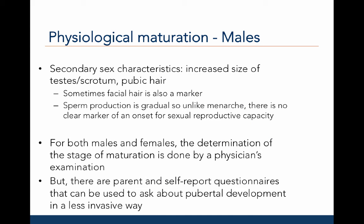When we talk about maturation and secondary sex characteristics for males, we typically focus on an increase in the size of the testes or scrotum, and the development of pubic hair. Some researchers will also examine the development of body hair more generally, including facial hair, as a marker of maturation in males. Since sperm production develops gradually, unlike menarche, there is no clear marker for the onset of sexual reproductive capacity in males. For both males and females, the determination of stage of maturation is typically done by a physician's examination. But there are parent and self-report questionnaires that can be used to ask questions about pubertal development in a less invasive way. These questions tend to be less accurate because children and teens have difficulty saying how developed they are or rating their development compared to picture charts. And parents often don't know how developed their children are. Preteens are much more modest around their parents than little kids, so it's hard to determine breast or testes size in a female or male.